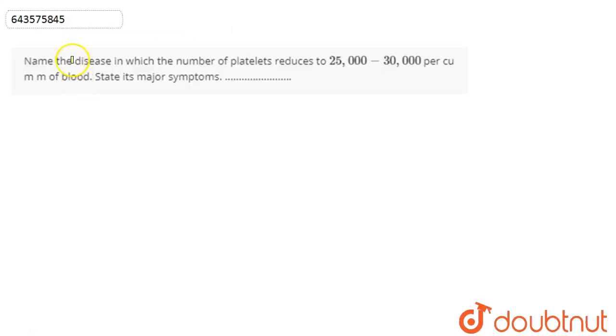In this question, we are asked to name the disease in which the number of platelets reduces to 25,000 to 30,000 per cubic mm of blood, and state its major symptoms.